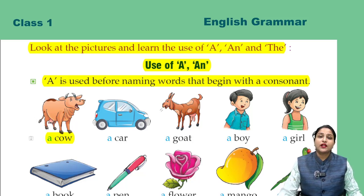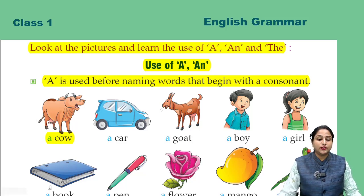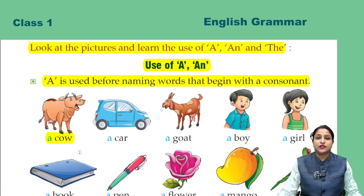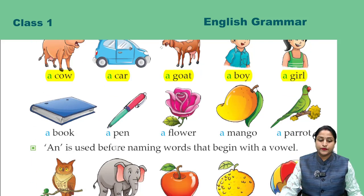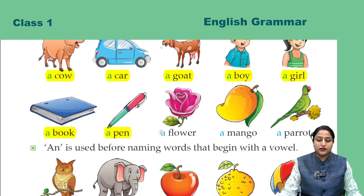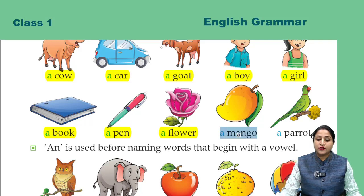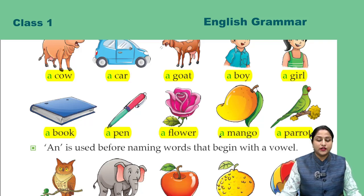Consonant se pehle kya aata hai? A. So yahaan par aya: a cow, a car, a goat, a boy, a girl, a book, a pen, a flower, a mango, a parent.